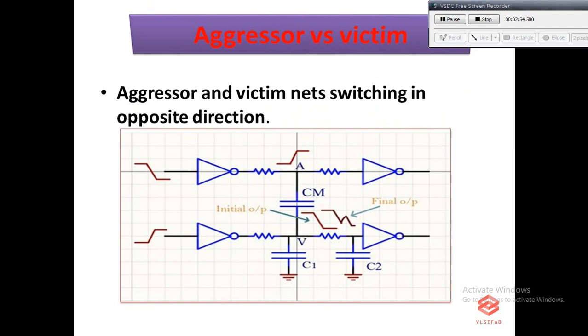If both are switching in opposite directions, the aggressor switches from logic 0 to logic 1 and the victim net is switching from logic 1 to logic 0, which I have referred in the diagram.